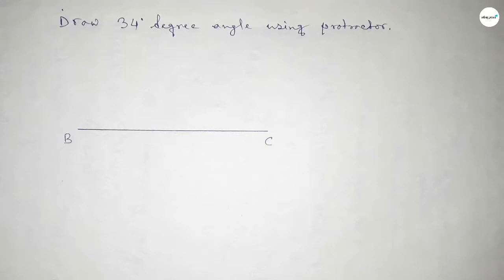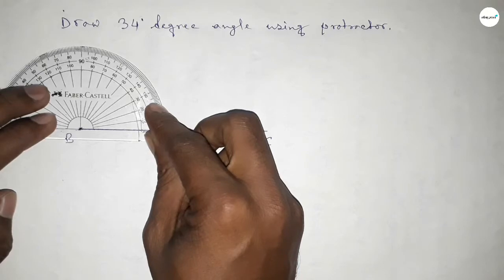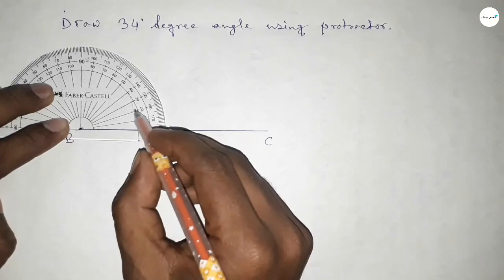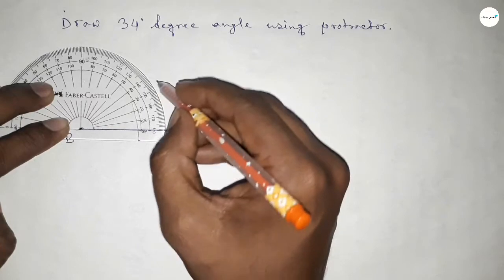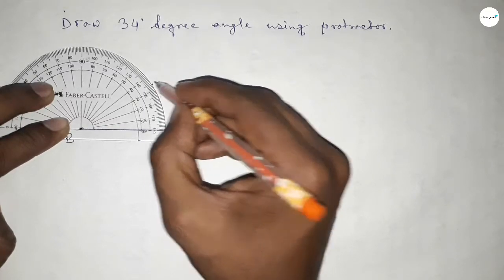Now putting the protractor on the point B perfectly, then counting the angles. So this is 0, 10, 20, 30, 31, 32, 33, and this is 34. So this is a 34-degree angle.